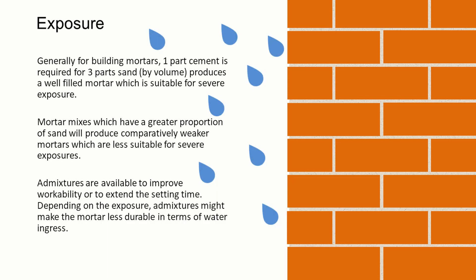We also have to think about exposure. Generally for building mortars, one part cement is required for three parts sand to fill all those air voids, producing a well-filled mortar suitable for severe exposure. If we put more sand in, we get a comparatively weaker mortar which is less suitable for severe exposures. There's also the possibility of adding admixtures into the mortar, which can improve workability or extend the setting time, but depending on the exposure, some admixtures might make the mortar less durable in terms of water ingress.